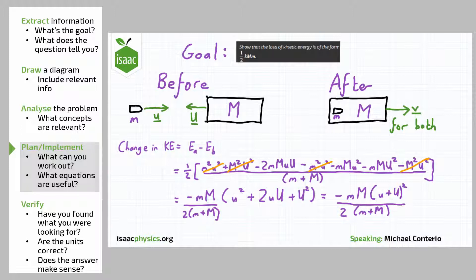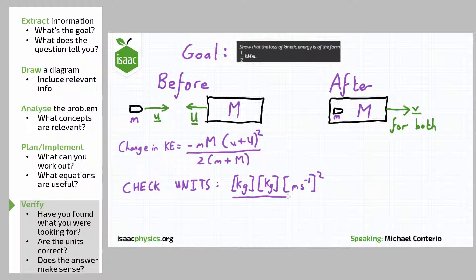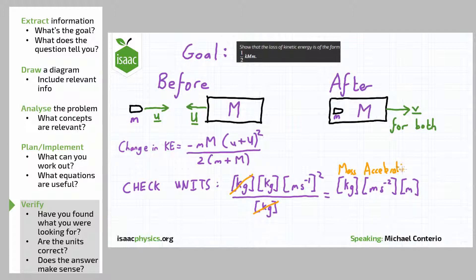Now that we have a simple equation for the change in kinetic energy, we can check it to make sure we've not made any mistakes. Firstly, you can see there's a minus sign, which means that kinetic energy has been lost in the collision — which is what we expected. We also want to check the units: we've got kilograms times kilograms times a speed squared (metres per second, all squared), divided by kilograms. We can rewrite this as kilograms times metres per second squared times metres — that's a force in newtons multiplied by a distance in metres. Force times distance gives us work, measured in joules, which is the same as a change in kinetic energy. So the units work.